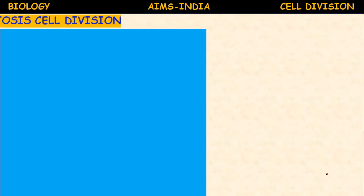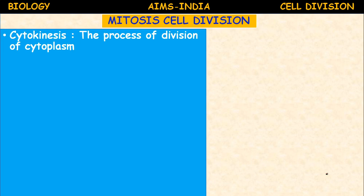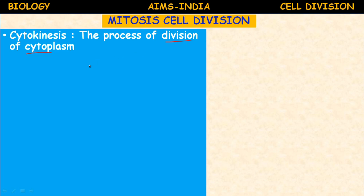Next, the important and last stage: cytokinesis. During this stage, the cell membrane pinches in animal cells, or a cell plate is formed in plant cells, at the middle of the cell, dividing it into two separate daughter cells. Each daughter cell gets half of the cell organelles and an identical set of chromosomes. Cytokinesis is the process of division of the cytoplasm. Every cell division involves two steps: division of the nucleus — karyokinesis — and division of the cytoplasm — cytokinesis.